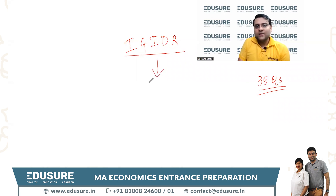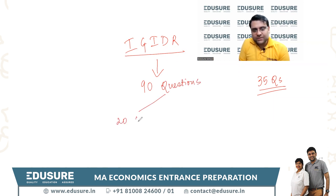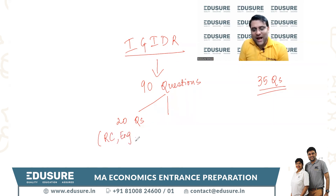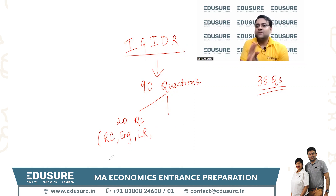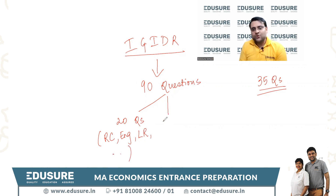They will now ask you 90 questions in the entire paper. 20 questions will be Section A, which will include reading comprehension, English verbal, logical reasoning, and basic math like time, speed and distance, work, and those kinds of questions. A little bit of coordinate geometry can also come here — very basic, Class 8 and below mathematics.